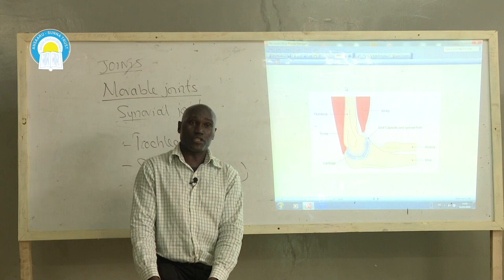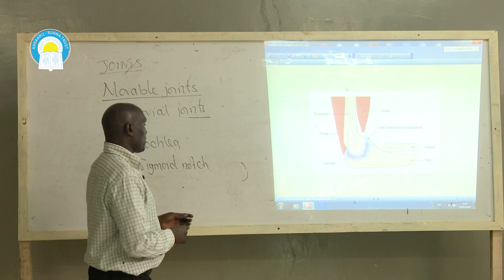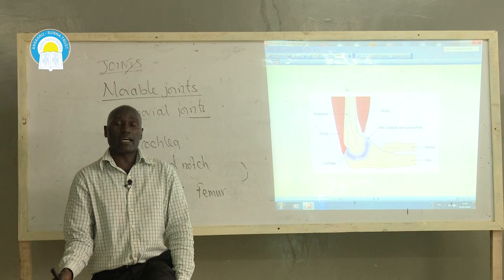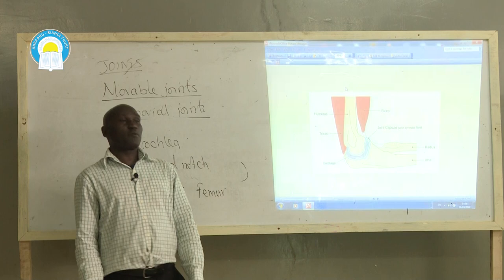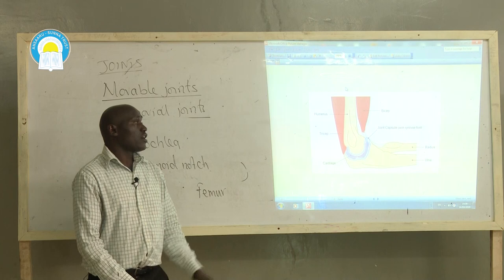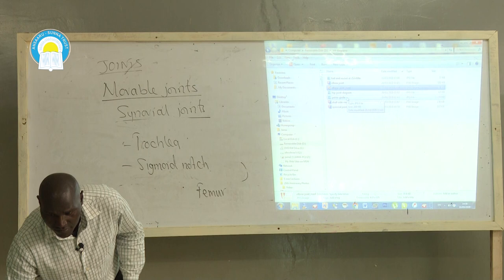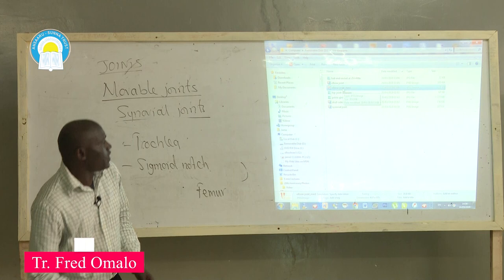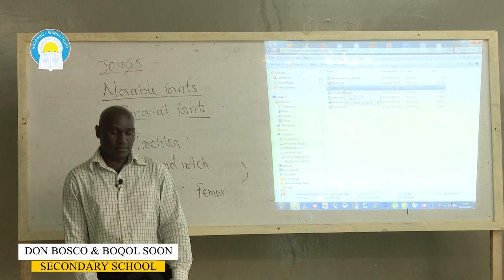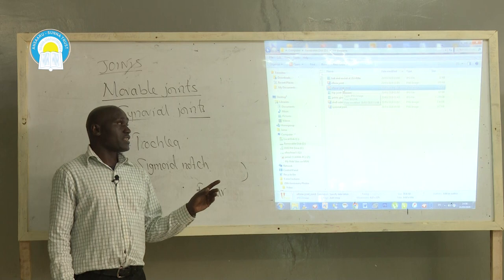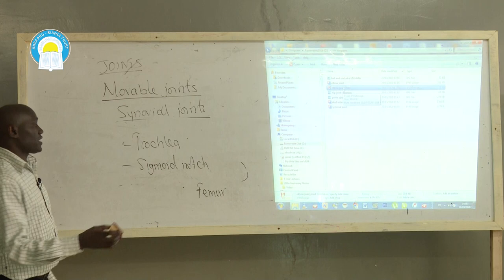The last type of hinge joint is found at the knee. The bone of the thigh is known as femur. The bones of the lower part of the leg include tibia — on the side of the big toe — and fibula — on the side of the small toe. Femur, tibia, and fibula form a hinge joint at the knee, which can also stretch up to a maximum of 180 degrees.